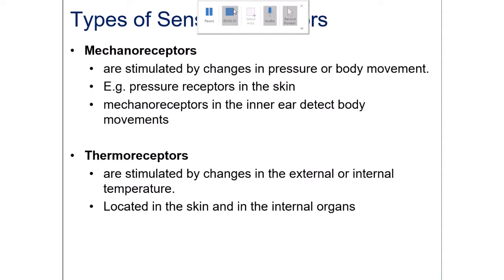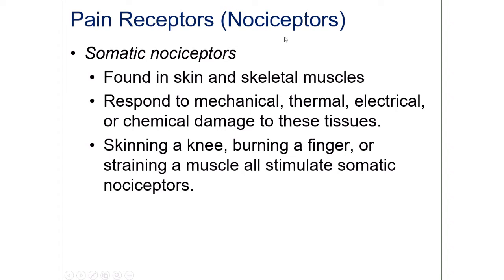Next we have pain receptors, also known as nociceptors. There are two types. The somatic nociceptors are found in skin and skeletal muscle — basically registering pain from parts of the body you have voluntary control over. These respond to mechanical damage like a cut or scrape, thermal damage like burning a finger, electrical shock, or chemical damage like touching acid.